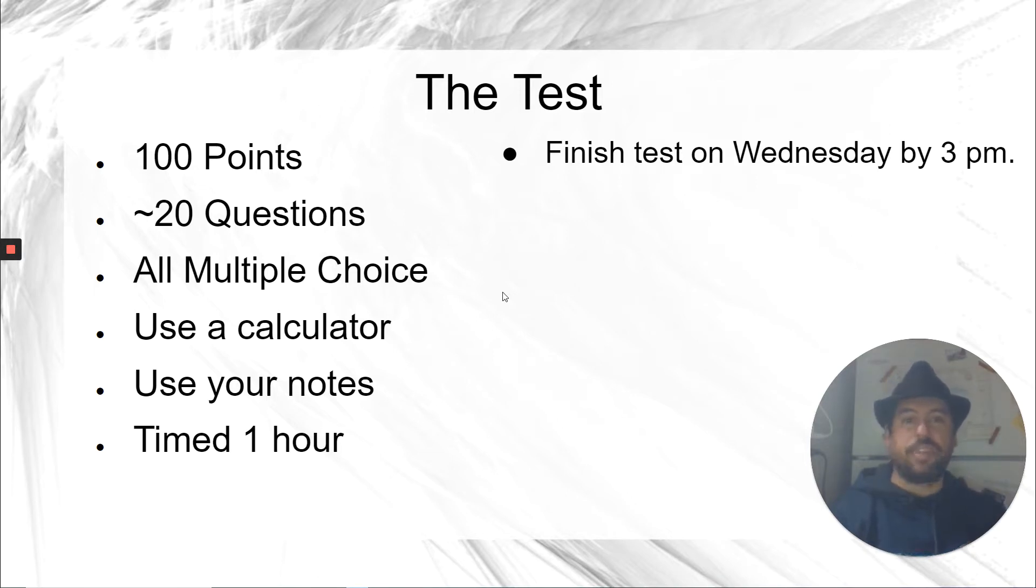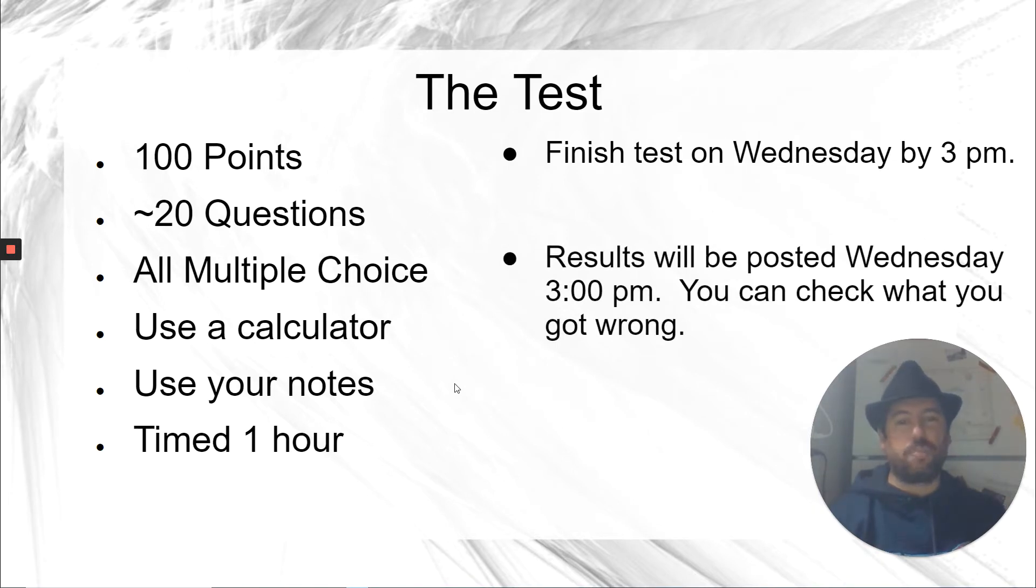You need to finish the test by Wednesday at 3 p.m. So you can take the test Monday, Tuesday, or Wednesday up until 3. When you finish the test, it will not tell you your score. Make sure you've started by 2 p.m. so you can be finished by 3 p.m. on Wednesday. At 3 p.m. Wednesday, the results will be posted. I will put them in Aries, and you can also go back into the test and see which problems you got wrong and which ones you got right. I'll open it up so that you'll actually be able to see what the right answer is.